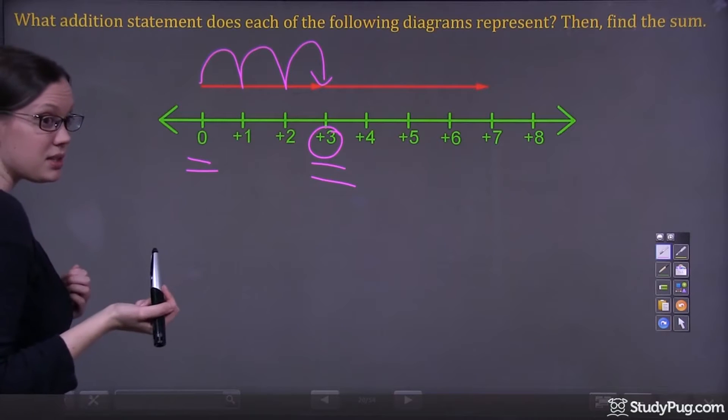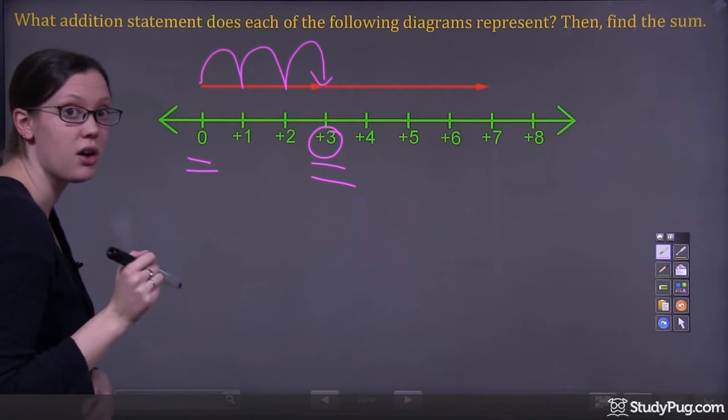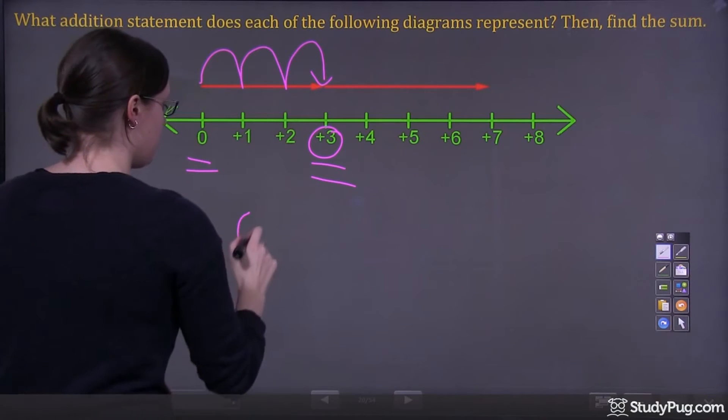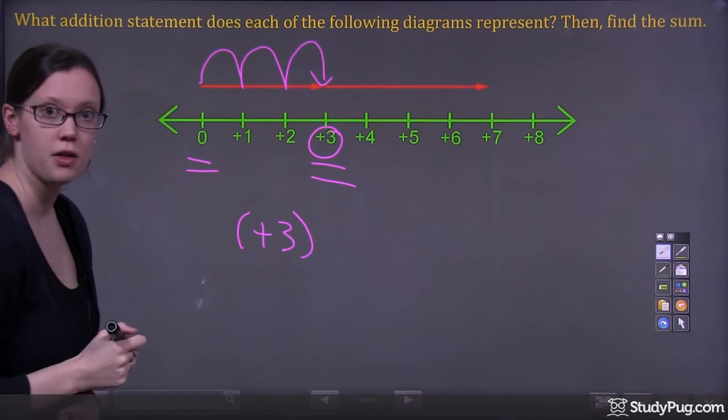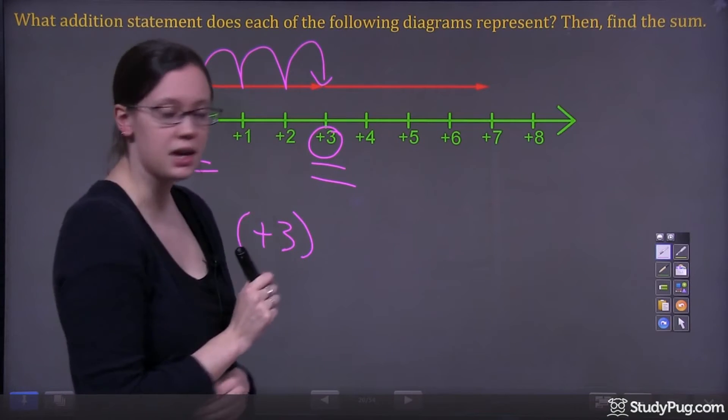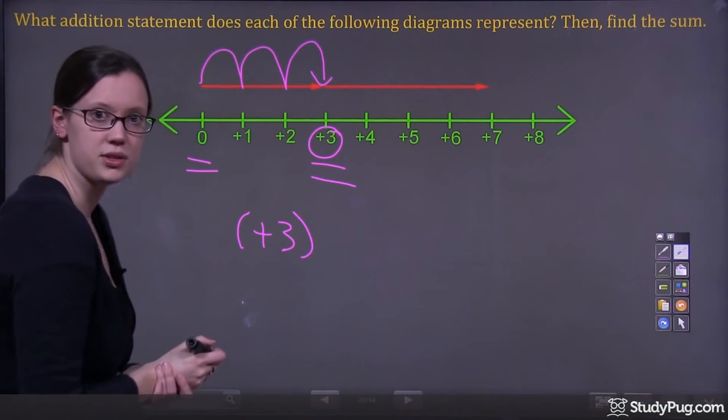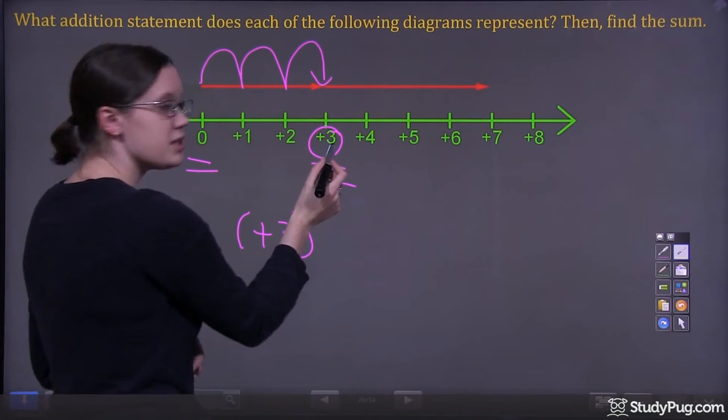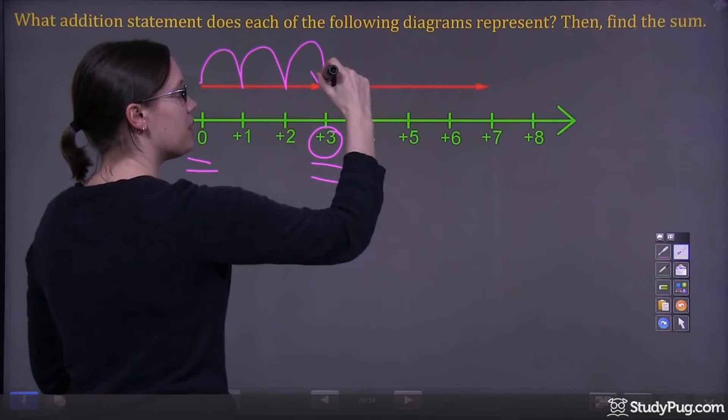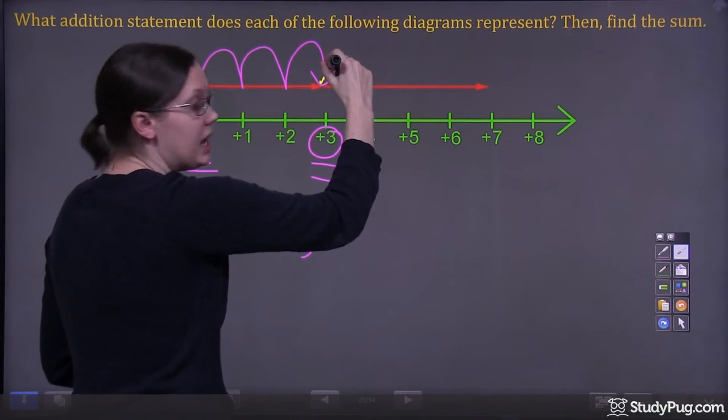That means that our first integer in our statement is going to be positive 3. Now let's look at the second arrow. Where does the second arrow start? The second arrow starts where the first arrow ended. It starts at positive 3 and it goes to where? Where does it end?